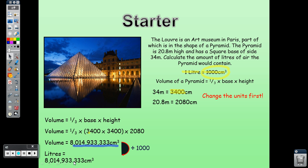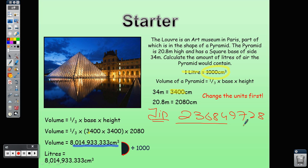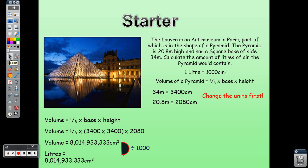The answer is 8014.933... liters. Here's a useful tip: when dividing by 1000, just move the decimal point three places to the left. For example, 23684972.8 ÷ 1000 = 23684.9728. If dividing by 100, move the decimal two places; by 10, move it one place.